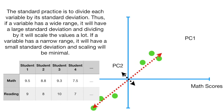The standard practice is to divide each variable by its standard deviation. Thus, if a variable has a wide range, it will have a large standard deviation, and dividing by it will scale the values a lot. If a variable has a narrow range, it will have a small standard deviation, and scaling will be minimal.